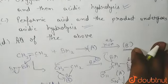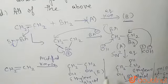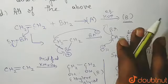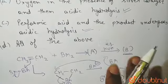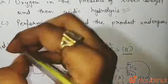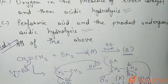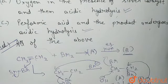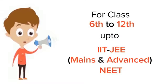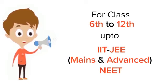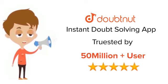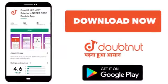Thus, all of the reactions give product B, which is ethylene glycol. So option D — all of the above — is the correct answer. I hope you understood. Thank you so much. For Class 6–12, IIT JEE and NEET level, trusted by more than 5 crore students — download the DoubtNut app today.